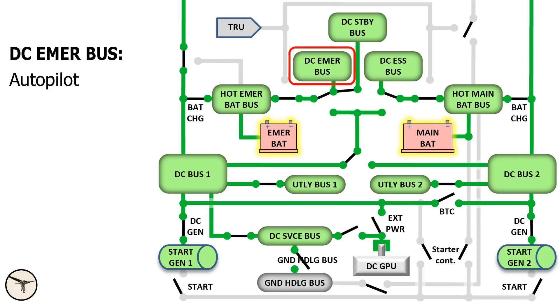DC emergency bus: Autopilot, VHF1, transponder 1. Normal trims. But we have the standby pitch trim.